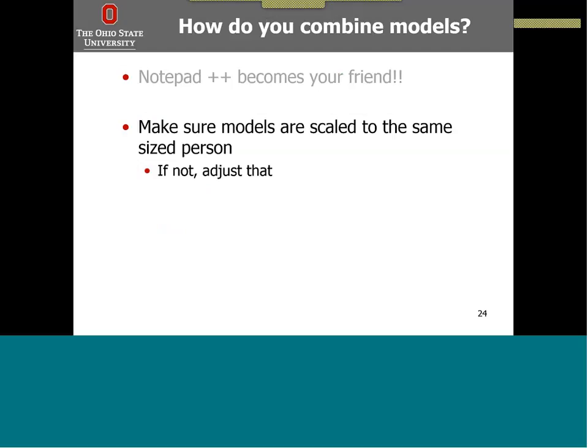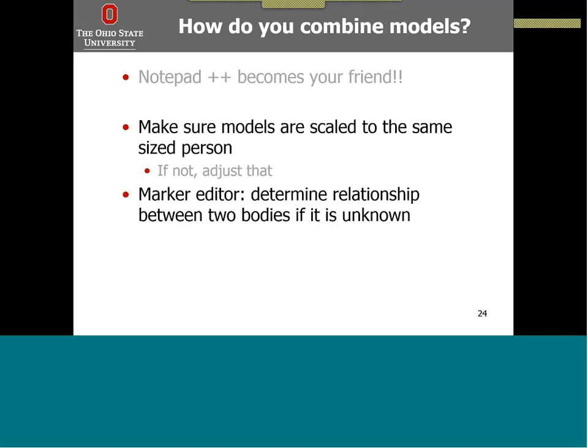When combining these models, you have to make sure that the models are scaled to the same size person. In my case, one model was scaled to a 1.7-meter male and another to a 1.8-meter male, so you need to adjust for that. You want to make sure the masses, lengths, and moments of inertia are all consistent for one representative size. I also used the marker editor to determine the relationship between two bodies that was unknown, which happened when I had to place a new ribcage onto the new spine from Christophe's model, and also for the Arnold lower leg.